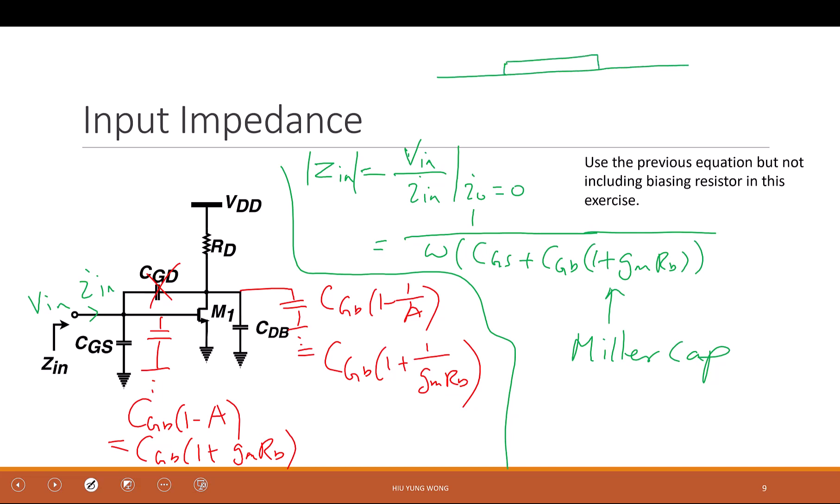You see, Cgd, do you remember Cgd is very small? If you remember what we discussed earlier about the transistor, we have this source, we have this drain, we have this gate. Of course they're separated by an insulator, and the Cgd is this tiny part, this tiny overlap part. But however, if you put this in a common source configuration,